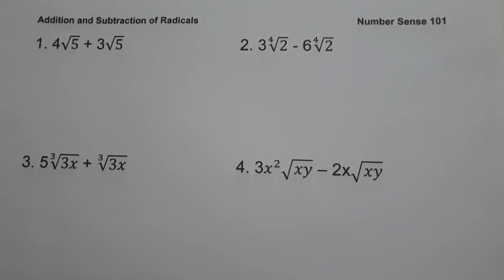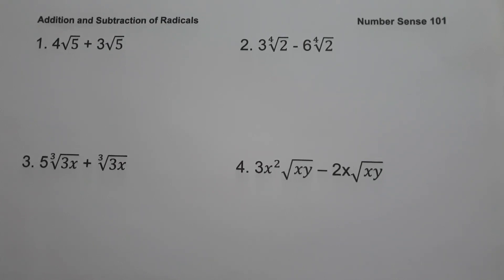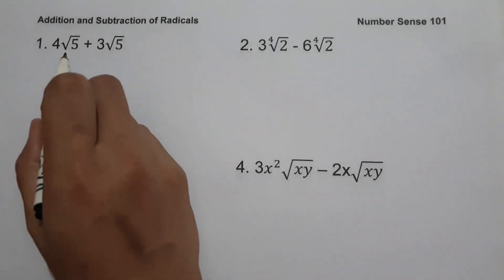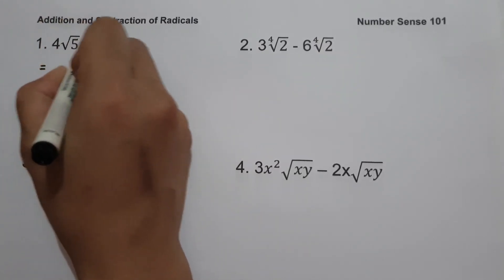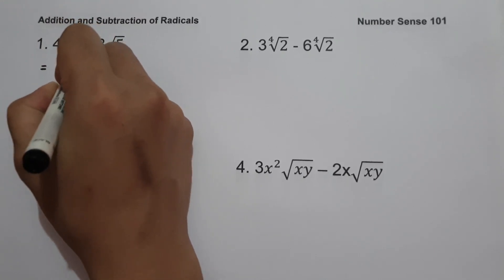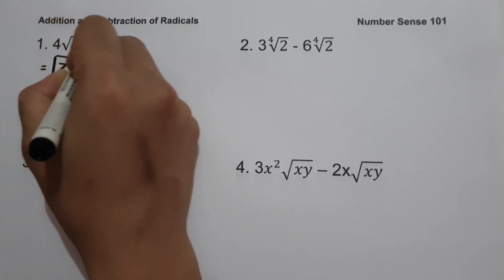For today's video we are going to talk about addition and subtraction of radicals. Let's have example number one: four square root of five plus three square root of five. In adding and subtracting radicals, always remember we can only add or subtract radicals if we have the same index and same radicand. In our given we have the same index and same radicand, so all we have to do is add the coefficients: four plus three gives us seven square root of five, and this will be our answer.